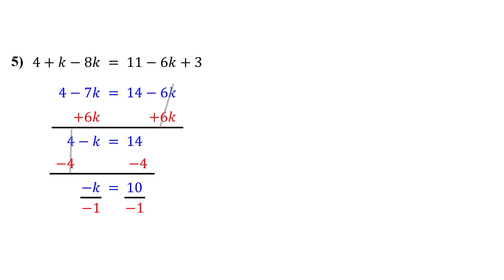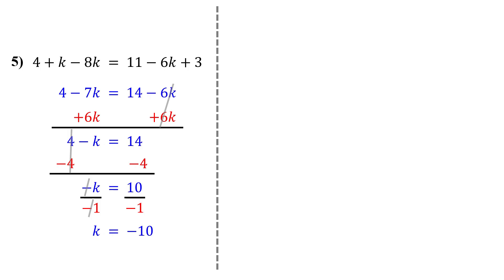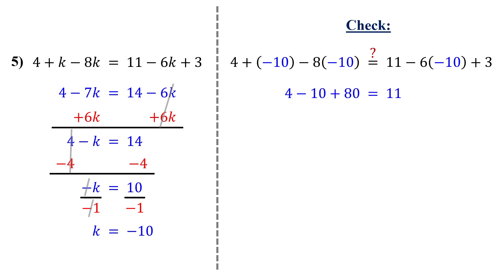Finally, divide both sides by negative 1 to get k by itself. Why do we divide by negative 1? Because negative k means negative 1 times k, and we undo multiplication by dividing. So on the left, the negatives cancel out, leaving k. And on the right, we get negative 10. So the solution is k equals negative 10. To check, plug in negative 10 into the original equation and simplify. Both sides are equal, so we are good.